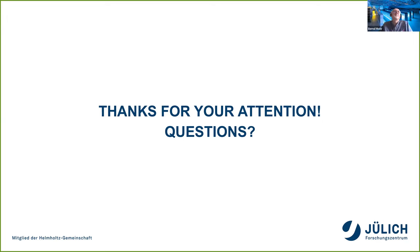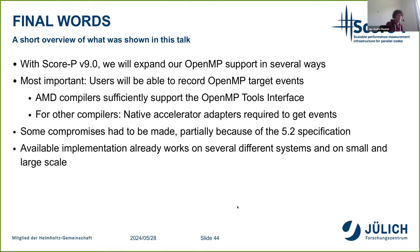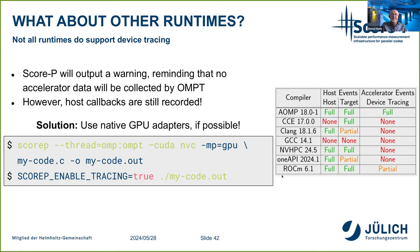Another question: are there constraints on which compiler tools are supported? If you want support for device tracing, you really can only use AMD compilers right now — both ROCm and AOMP have sufficient support, with some limitations in ROCm. If you want just the host events, you can also use other compilers like Clang, NVHPC, and OneAPI, and for GPU-side information you will need to use a native GPU adapter alongside.